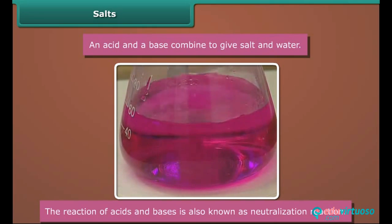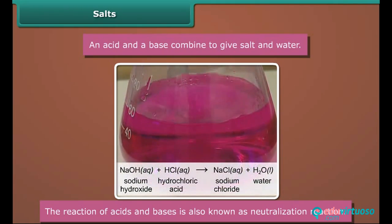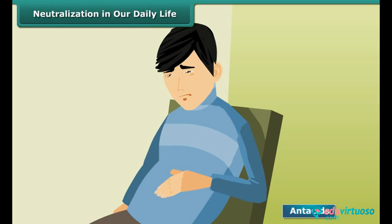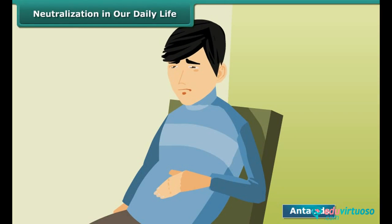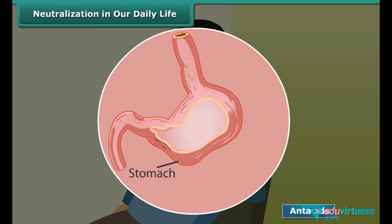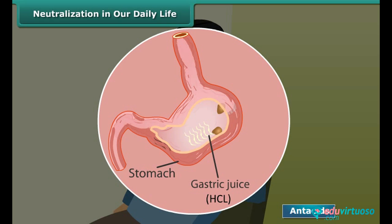The reaction of acids and bases is also known as a neutralization reaction. Sometimes we feel inflammation in our stomach. Our stomach secretes hydrochloric acid (HCl), a very strong acid that helps us digest food, but too much secretion causes inflammation. To relieve this, an antacid is taken — the antacid contains a base that neutralizes the excess acid in the stomach.